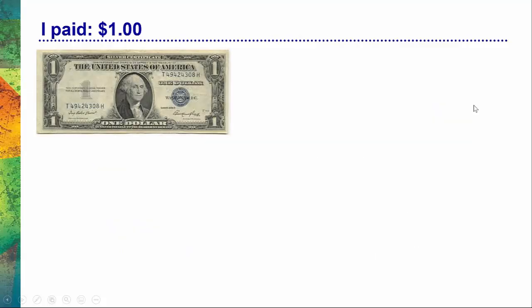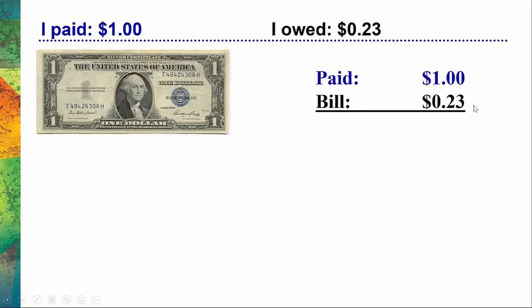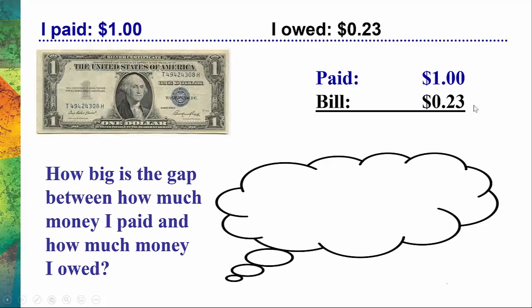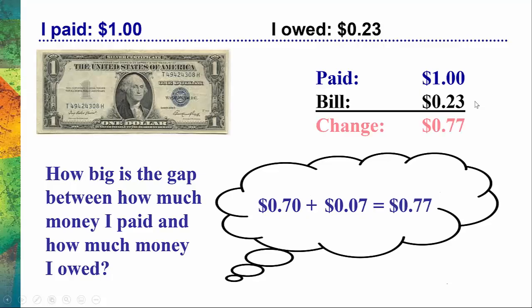Let's go through another example. Let's say I paid $1, but I only owed 23 cents. Clearly I'm owed some change. How big is the gap between how much money I paid and how much money I owed? Because it's kind of difficult to see the difference between $1 and 23 cents, I'm going to take 23 cents and round it up to a number that's easier to work with, like 30 cents. Pretty easily in my head, I can see the difference between $1 and 30 cents — it's 70 cents. Now I just need to ask, how big was the difference between 23 cents and 30 cents? That's 7 cents. So I add up 70 cents and 7 cents and the amount of change I'm owed is 77 cents. You can verify that with a calculator.